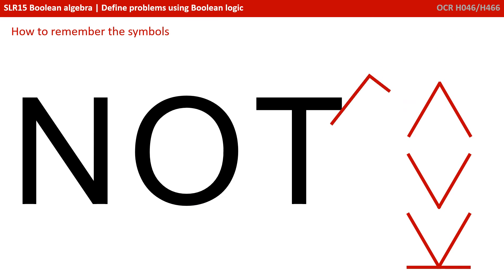So we've got a little trick here for helping you remember the various different symbols. So you can see here that if we take the symbol for NOT, it fits nicely into either side of a capital letter T. So that's one way you could use to remember which symbol is used to represent NOT.